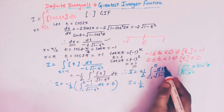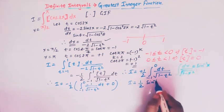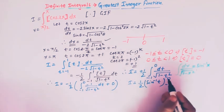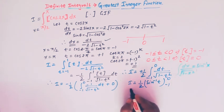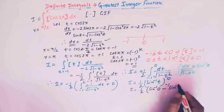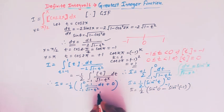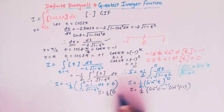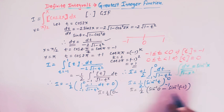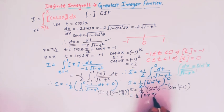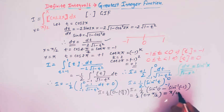The value of this integral is [sin⁻¹t] from −1 to 0. Substituting: sin⁻¹(0) − sin⁻¹(−1) = 0 − (−π/2). So I = (1/2)(0 + π/2) = π/4.